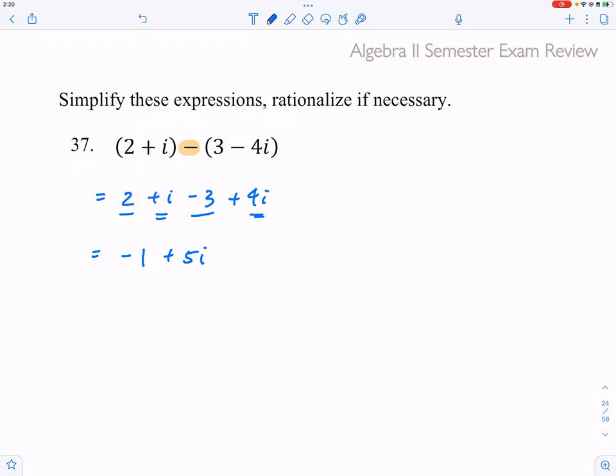You don't add anything more because they are not like terms. You would express the answer this way: instead of saying 5i plus negative 1, we always express these complex numbers in a plus or minus bi form, which is a lot easier. So negative 1 plus 5i is the final answer.